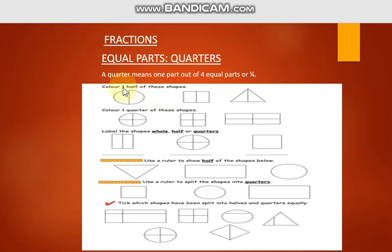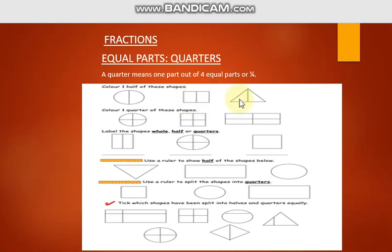The first question is: color half of these objects. You will have to color the halves of these objects. In this shape it is divided into two parts — you will color only one part. Similarly, in the other shapes you will also color one part each.